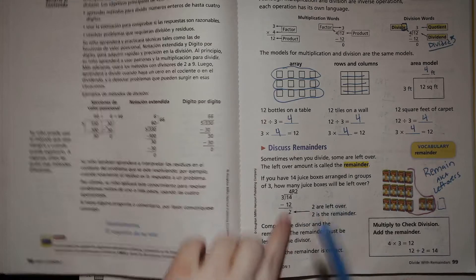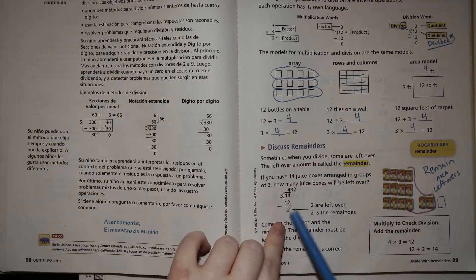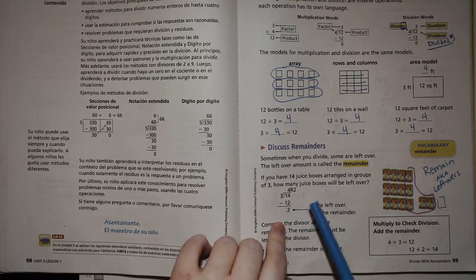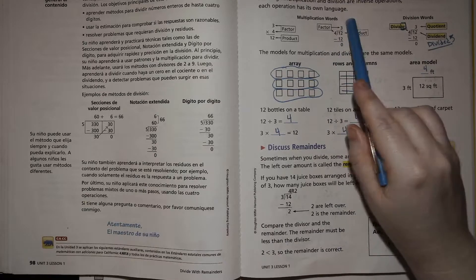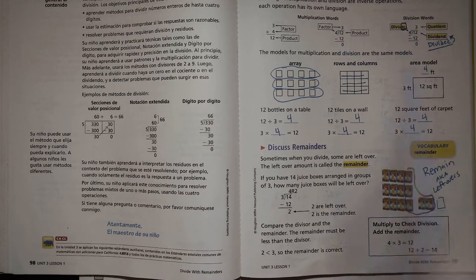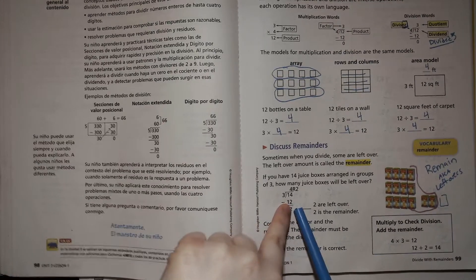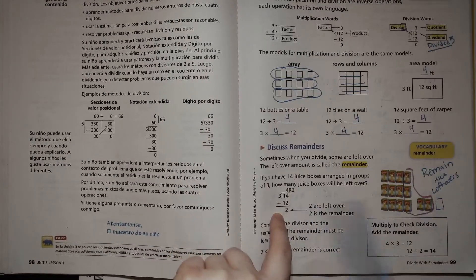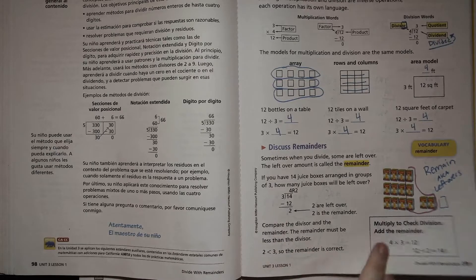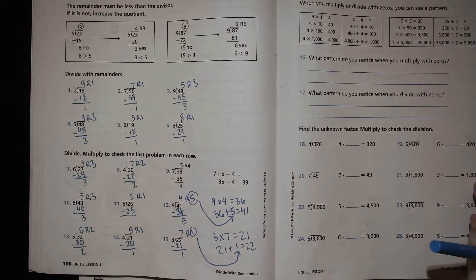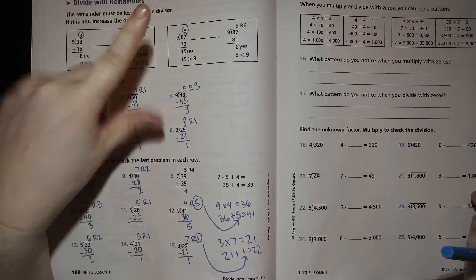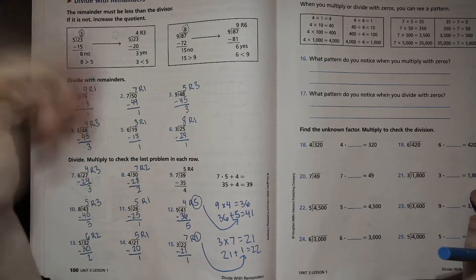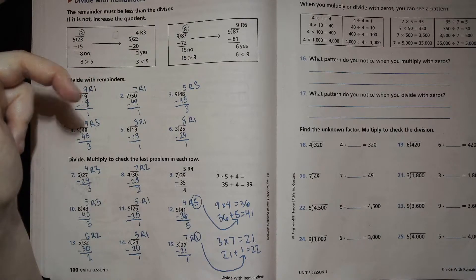And we also talked about remainders, which is basically the leftovers. So not every question that you're going to come across is going to be a perfect math fact that you've memorized for multiplication. So you've got to use your math fact to figure out how close you are and then how many are left over that won't fit in a full group. Then we practice that and make sure whenever you're doing this that your remainder is not bigger than your divisor. Because if it is bigger than the divisor, then you could have made a whole other group.